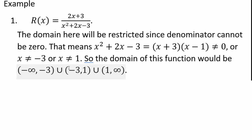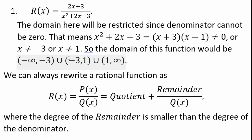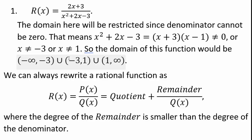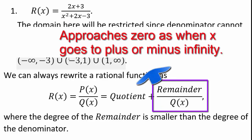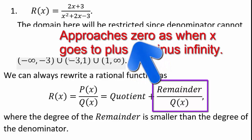If you remember division from your prerequisite materials, we can write a rational function as quotient plus remainder over divisor. The end behavior of the function is always dictated by the quotient function. The remainder will always have a degree smaller than the denominator degree, so for end behavior when x is very large, the remainder over the divisor q of x will always go to 0. That's why the end behavior is dictated by the quotient of this division.